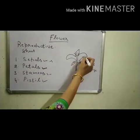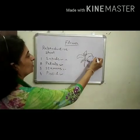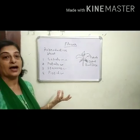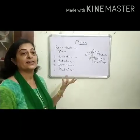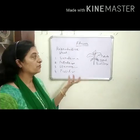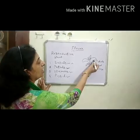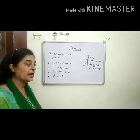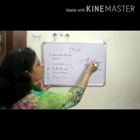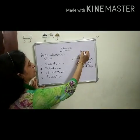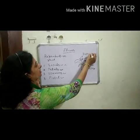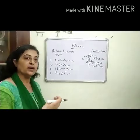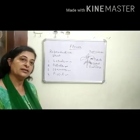Next one are the petals. Petals are the most colorful and attractive part of a flower. They may be in different colors like white, pink, yellow, red. These petals help in the process of pollination — they attract insects towards them for the process of pollination.